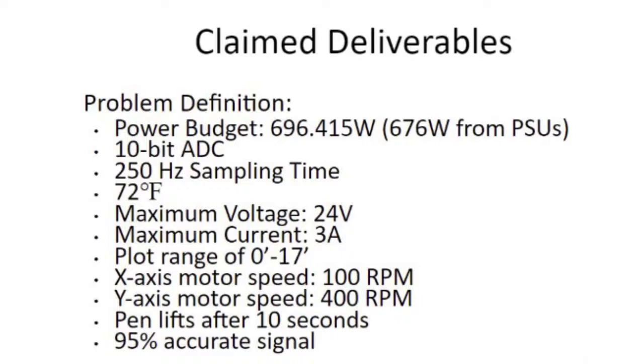That's just based off of the power supply that we had at the time and what we think the system would be able to handle or would need at the end result. And then a plotting range of about 0 to 17 inches. X-axis motor speed of 100 RPM, Y-axis 400 RPM. Pen lifts after about 10 seconds of plotting, and then we plan on the signal being 95% accurate compared to what you would see on an EKG.